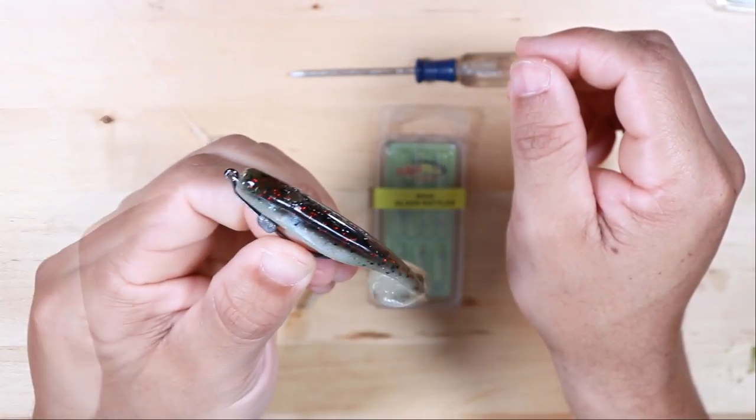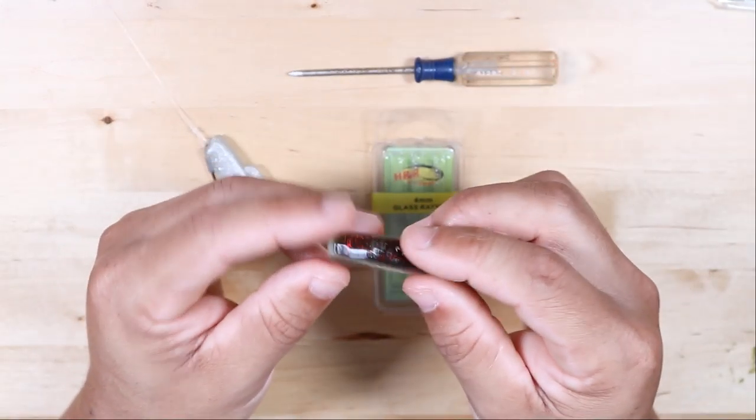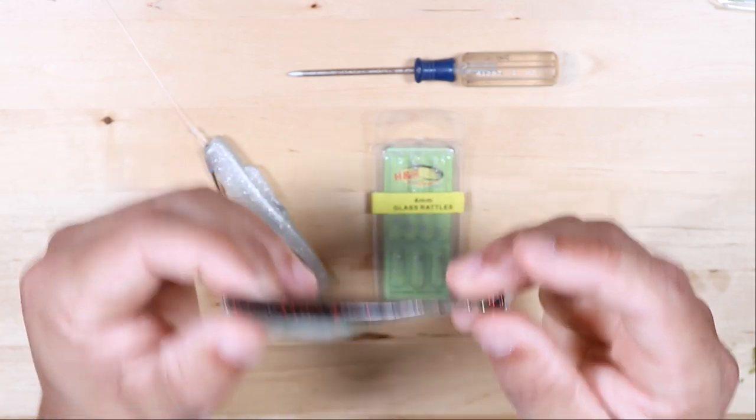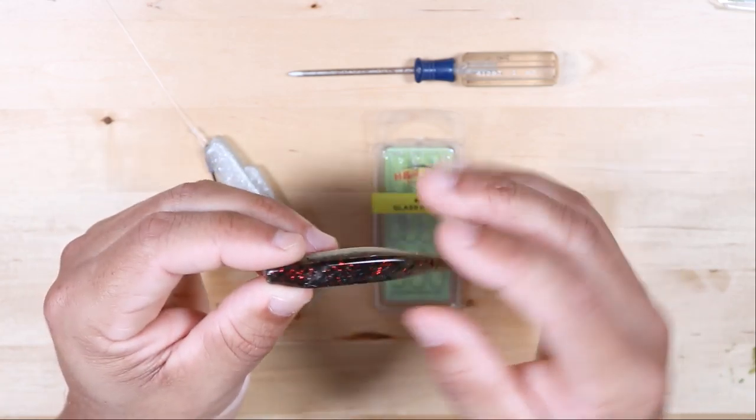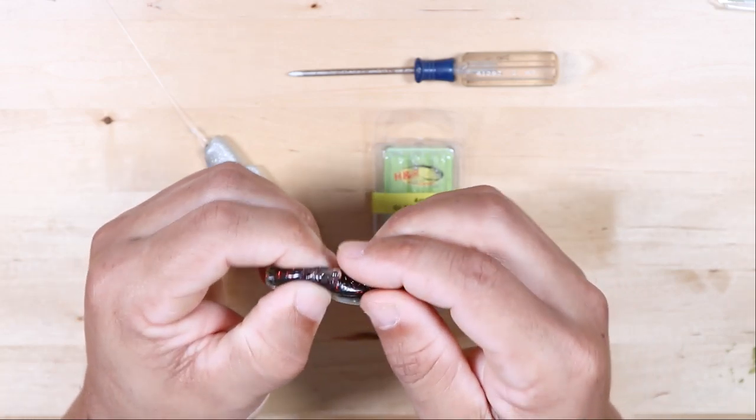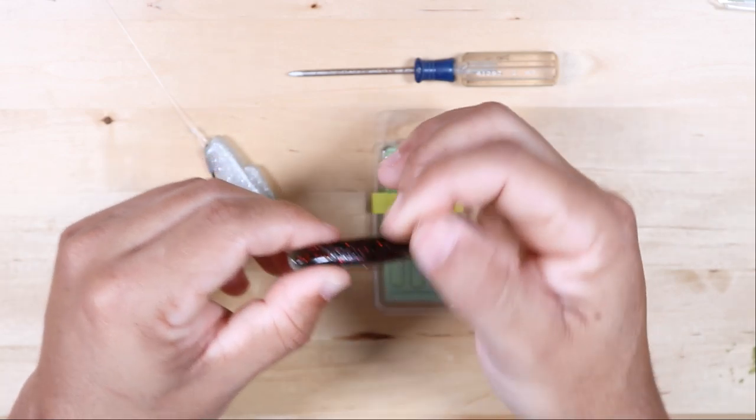The rattles are also very easy to remove, and I highly recommend doing so before your lure gets too destroyed that you end up losing the lure and the rattle itself. All you have to do is just squeeze it out of the lure and it'll pop right out, as you can see there.